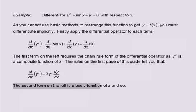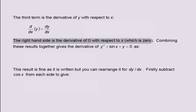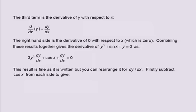The second term on the left is a basic function of x, and so d by dx of sin x equals cos x. The third term is the derivative of y with respect to x: d by dx of y equals dy by dx. The right-hand side is the derivative of zero with respect to x, which is zero. Combining these results gives: 3y squared dy by dx plus cos x plus dy by dx equals zero. This result is fine as written, but you can rearrange it for dy by dx.